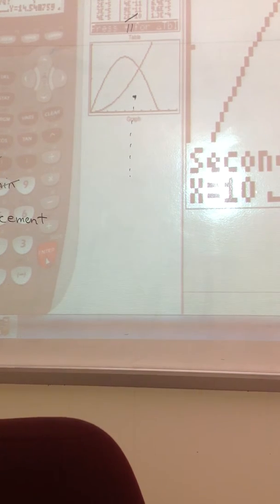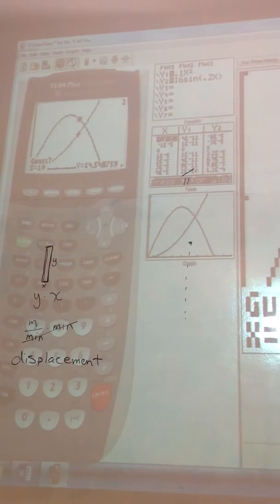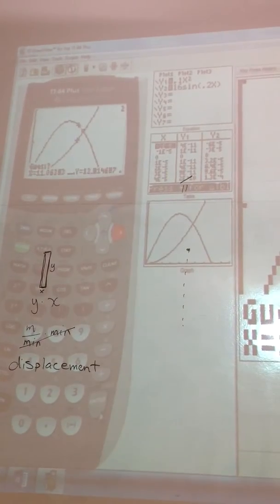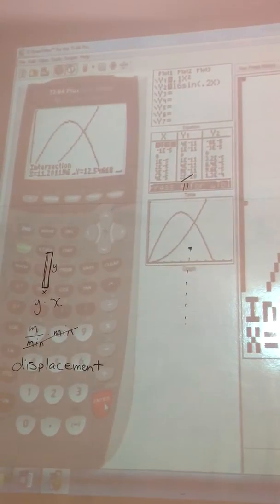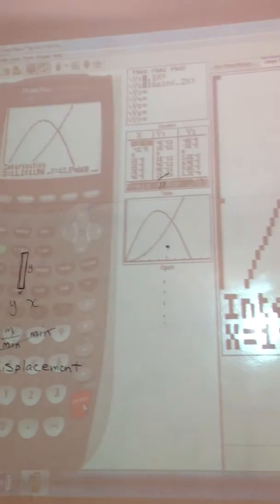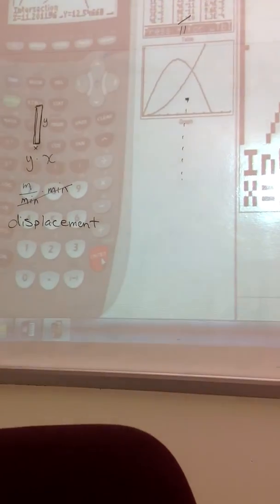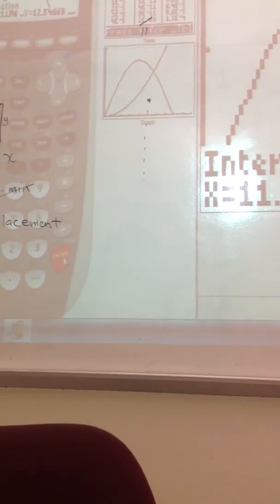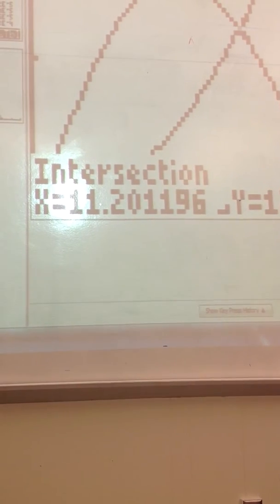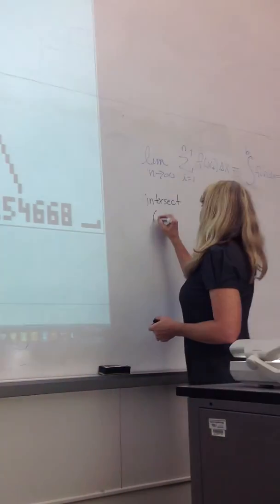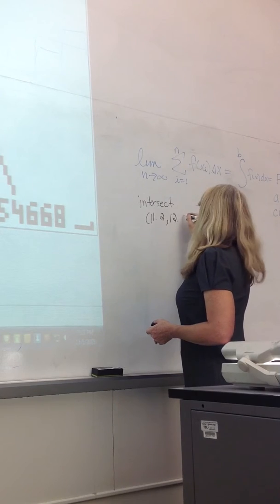I'm going to use that curve and then guess. I really could just say that there was 11.2 is the X and 12.5. So they intersect at 11.2 and 12.5.